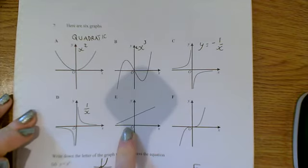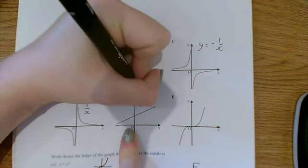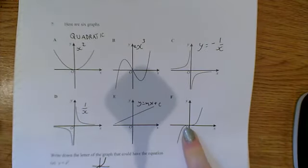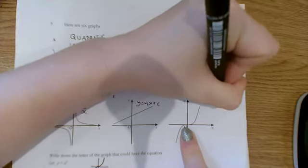E is a straight line graph, which means it's going to be in the form y equals mx plus c, or something x plus something, and F is just the graph of y equals x cubed.